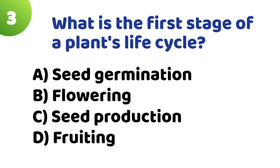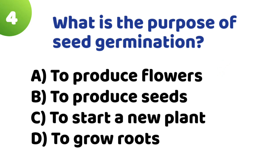Question 3: What is the first stage of a plant's life cycle? Option A: Seed germination. Option B: Flowering. Option C: Seed production. Option D: Fruiting. The correct answer is Option A — Seed germination.